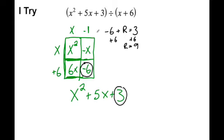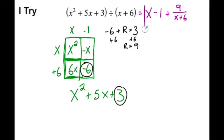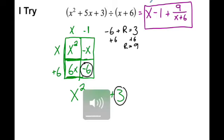I can see that the constant in my box, negative 6, is not equal to the constant in the dividend, which is 3. So I ask myself: negative 6 plus what will give me 3? The answer is 9. So the remainder is 9, and the answer is x minus 1 plus 9 over x plus 6.